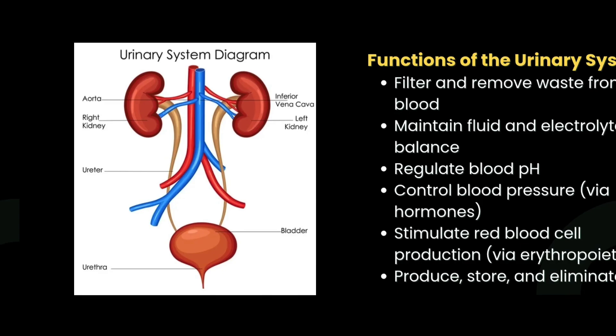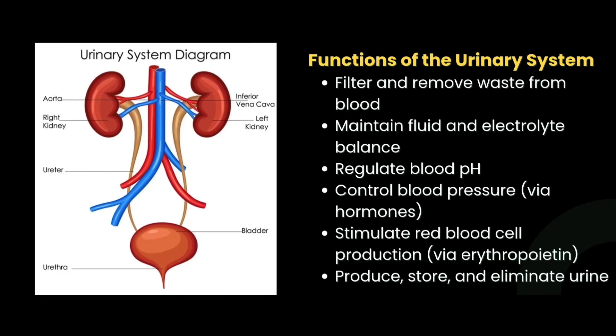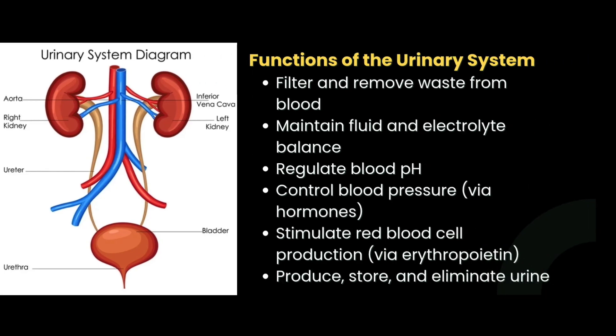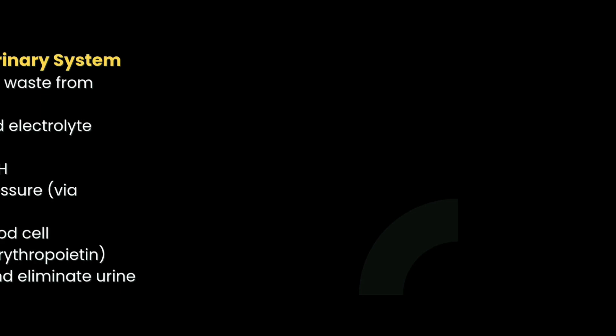Next, we have to explain the functions of the urinary system. The main functions are: it filters and removes waste from the blood, maintains fluid and electrolyte balance, regulates blood pH, controls blood pressure via hormones, stimulates red blood cell production via erythropoietin, and produces, stores, and eliminates urine.